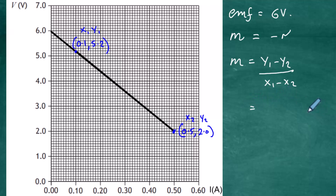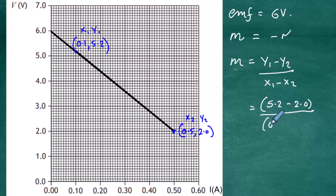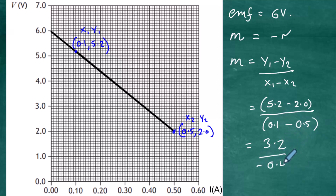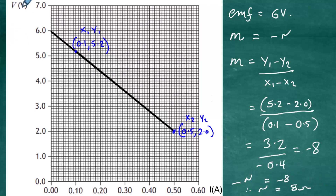So: y1 = 5.2, y2 = 2.0, x1 = 0.1, x2 = 0.5. Gradient = (5.2 − 2.0) / (0.1 − 0.5) = 3.2 / (−0.4) = −8. Since gradient m = −r, we have −r = −8, therefore r = 8. Resistance is measured in ohms, so the internal resistance is 8 ohms.